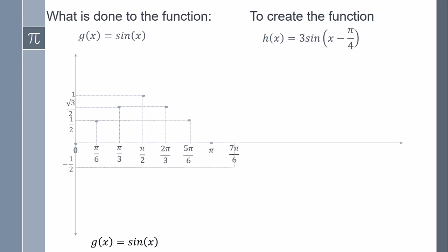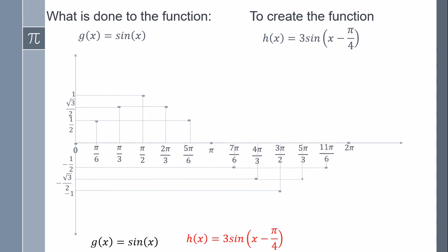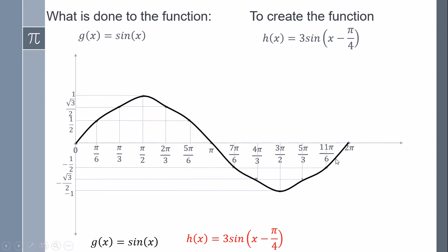We continue the same here: instead of 1 over 2 it is going to be minus 1 over 2. And we continue the same — instead of square root of 3 over 2 we have the same but with minus, and here we have minus 1. This is the function sin. I am making a graph just from 0 to 2 pi, which means until 360 degrees, which is commonly used. So this is the graph.